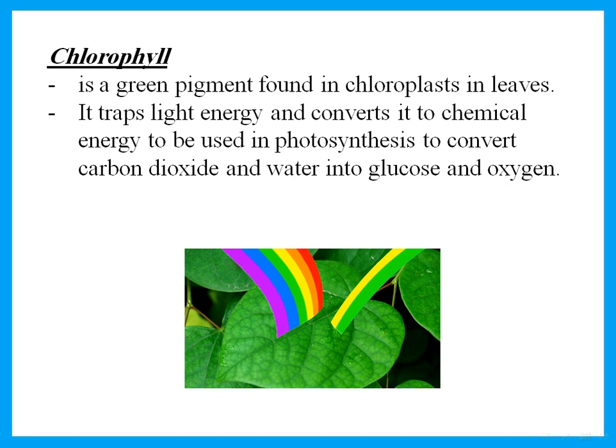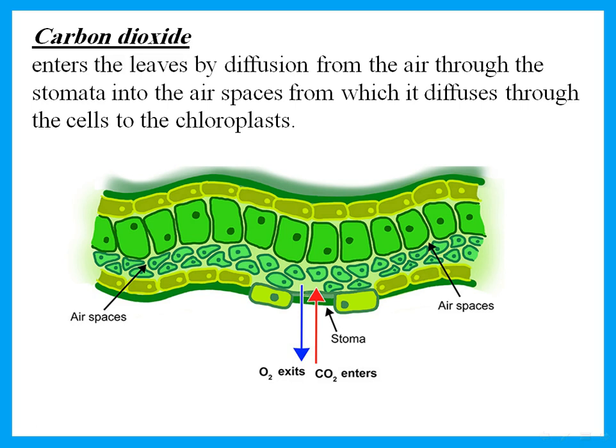The function of chlorophyll is first it traps the light energy and then it converts this light energy to chemical energy to be used in photosynthesis. How does the leaf get carbon dioxide? Carbon dioxide enters from the air outside — it enters the leaf by diffusion through the stomata, the tiny holes at the bottom of the leaf. Carbon dioxide diffuses in through the stomata into the air spaces in the leaf and then diffuses through the cells until it reaches the chloroplasts, where photosynthesis happens.